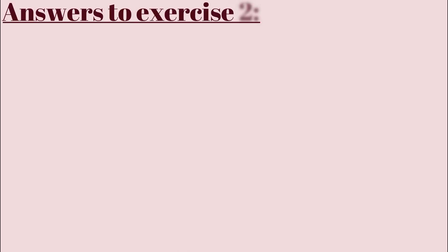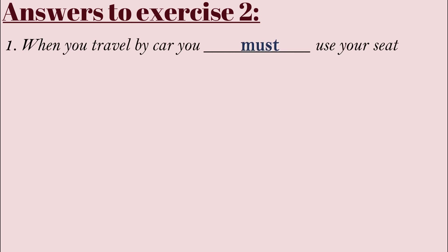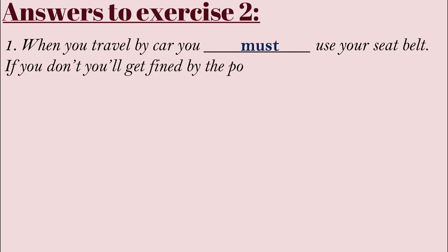Now answers to exercise two — here we will understand deeply the difference between 'must' and 'should.' Number one: 'When you travel by car, you must use your seat belt; if you don't, you'll get fined by the police.' So it's an obligation — unquestionable. You must use your seat belt.